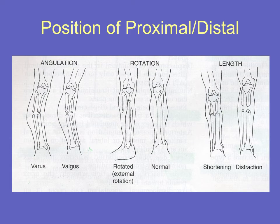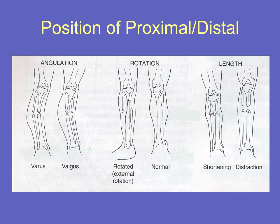We can describe angulation in terms of varus and valgus. Varus means the distal fragment is pointing towards the midline, and valgus means the distal fragment is pointing away from the midline. You can also describe this in terms of where the apex is — varus is a lateral apex, and valgus is a medial apex. Rotation can be internally or externally rotated, and the length of the bones may be changed. With shortening there's overlapping of the bone, and with distraction the bones have been pulled physically apart.